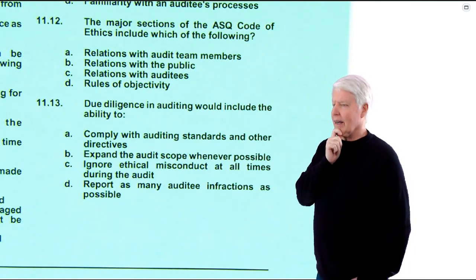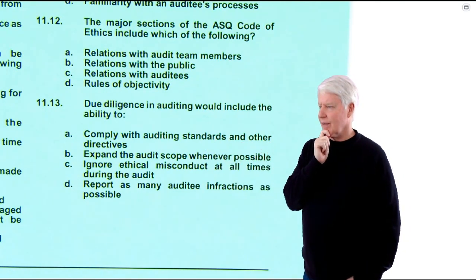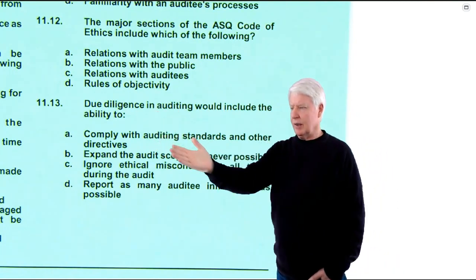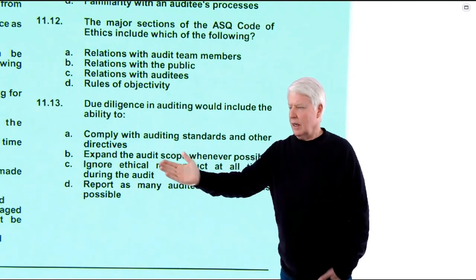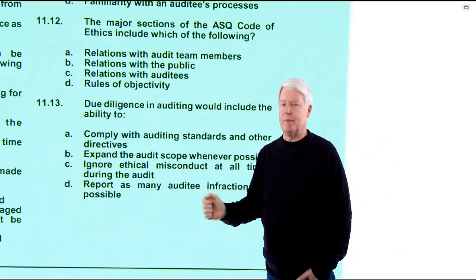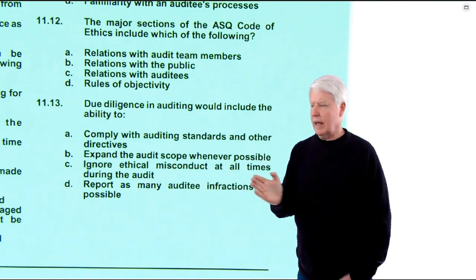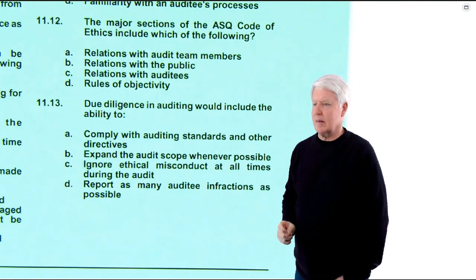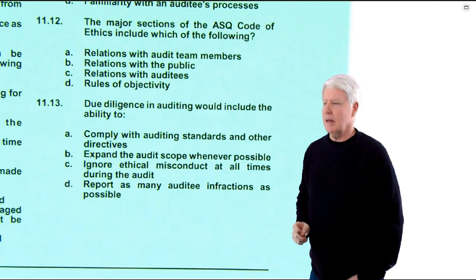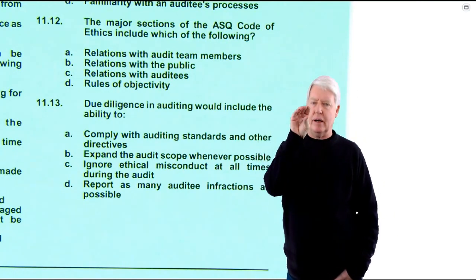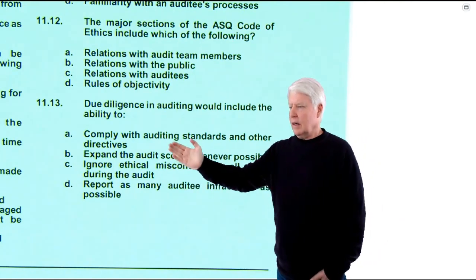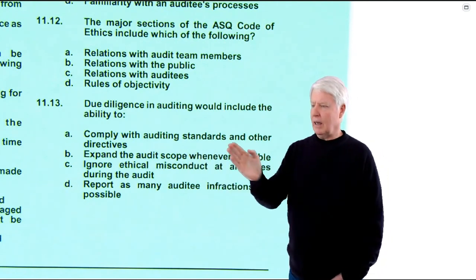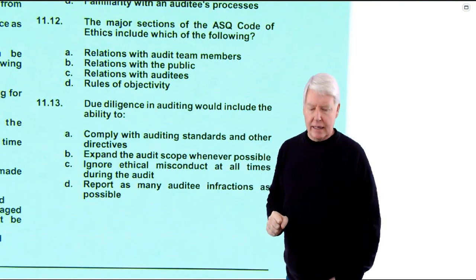Question 11.13: Due diligence in auditing would include — the ability to comply with auditing standards and other directives; expand the audit scope — no, you don't always want that depending on resources and objectives; ignore ethical misconduct — no, that's out immediately; report as many auditee infractions as possible — no, it shouldn't be a game to get the most findings. Your job is to objectively determine whether requirements are being met. Comply with auditing standards and other directives — yes, A. 11.13 has to be A, and it is.